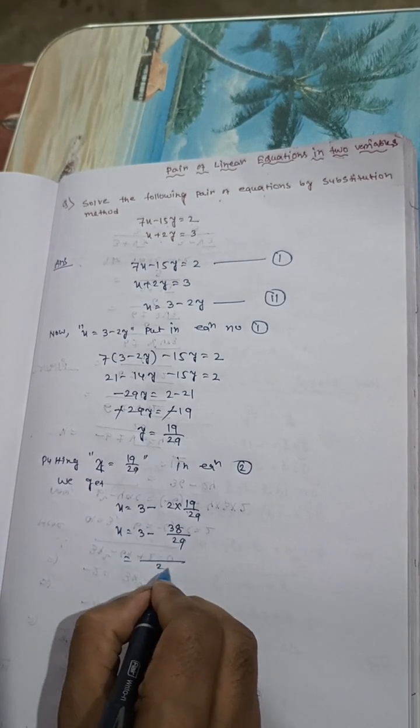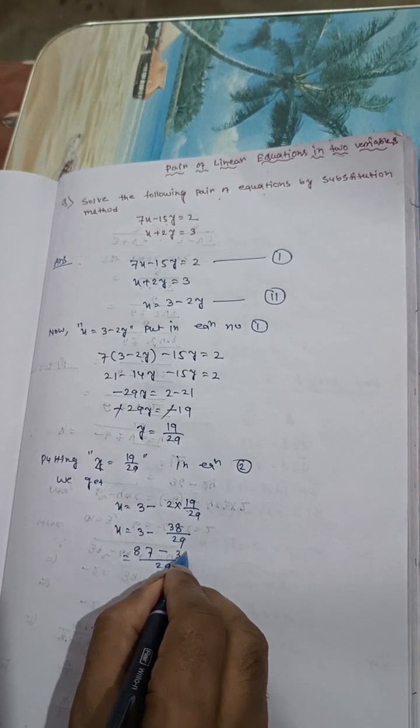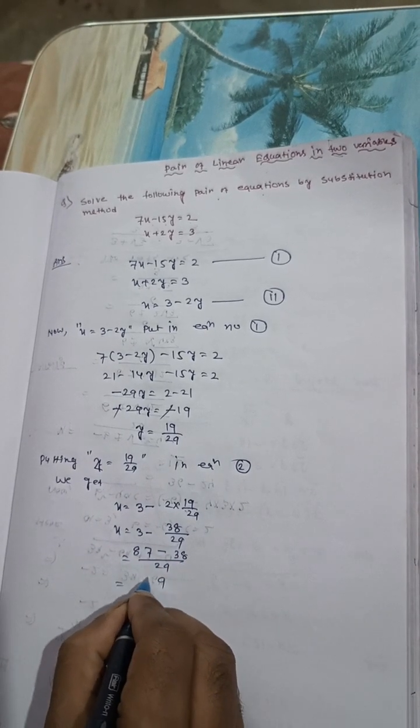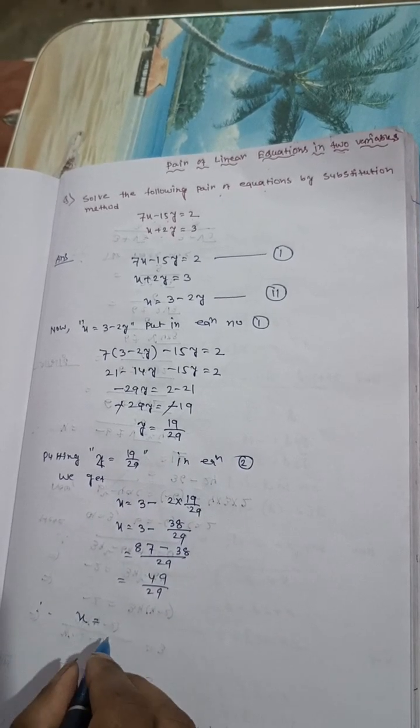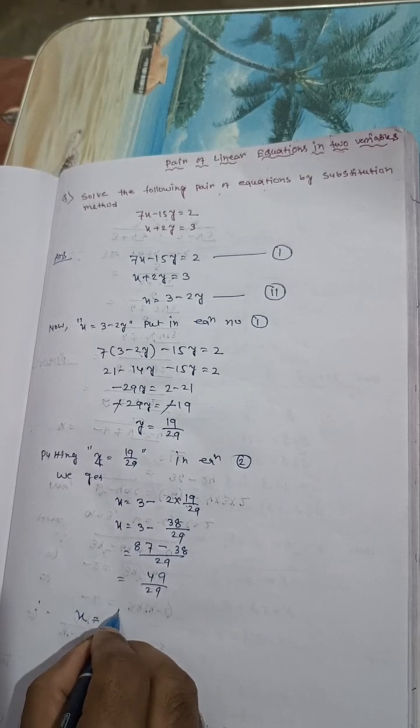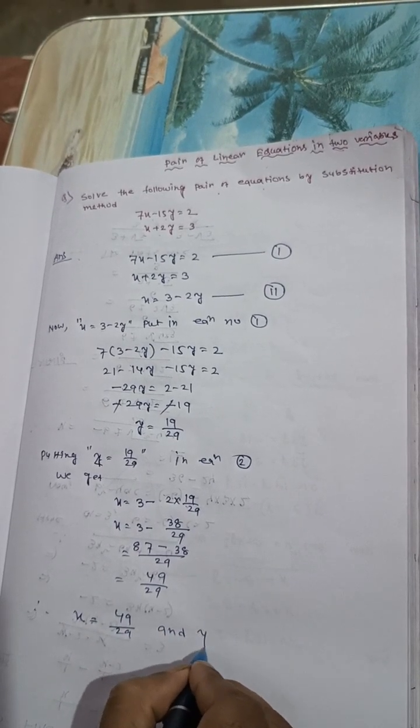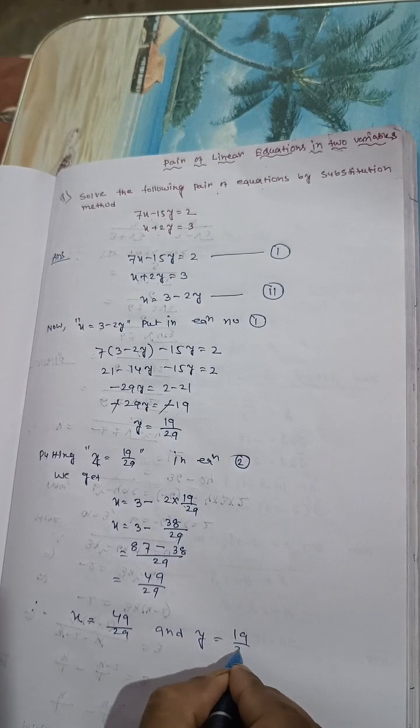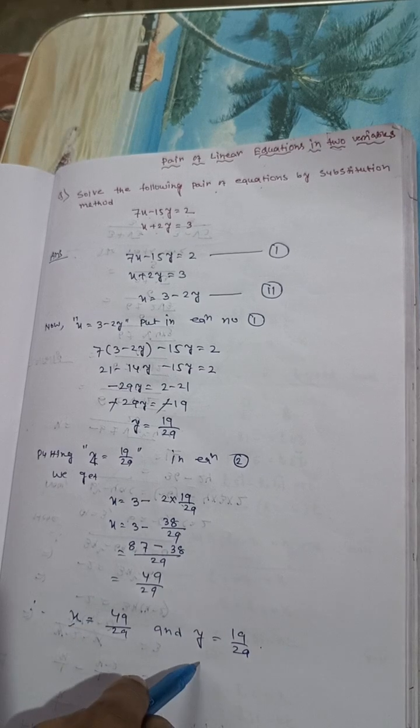x equals 87 minus 38 by 29, which is 49 by 29. Therefore, x equals 49 by 29 and y equals 19 by 29. This is the value of x, this is the value of y.